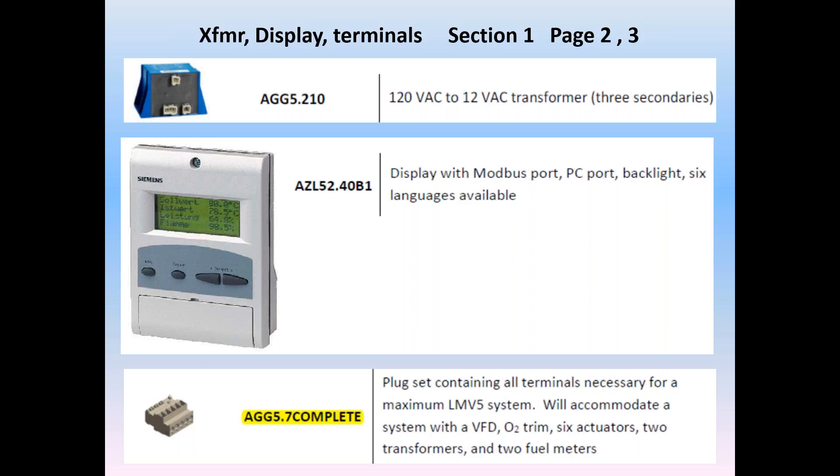It offers seven international languages, a four-line backlit display, a PC port interface for backup and optional programming, and while it can be programmed with a PC, typical commissioning on the LMV5 is done solely with the AZL. And finally, along with the burner and operating system CAN bus components, it also has a standard equipment, a Modbus port for BMS integration. All parts of the LMV5 system are sold individually, and terminal set options are shown throughout section one of this technical instructions.